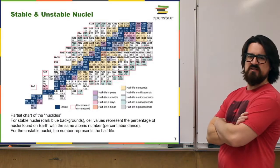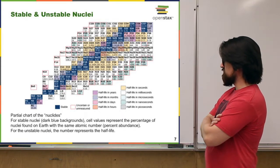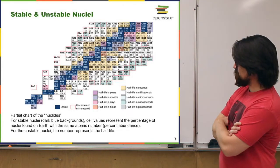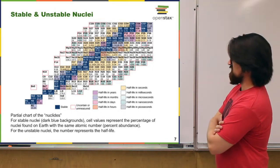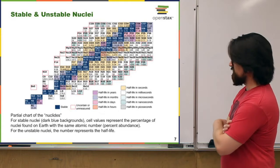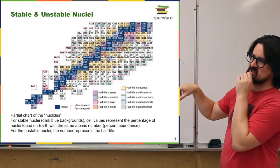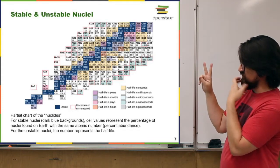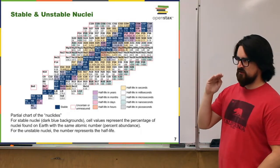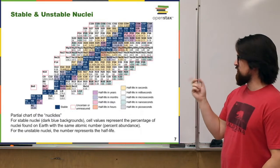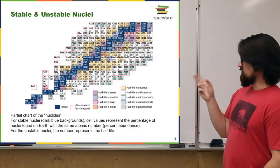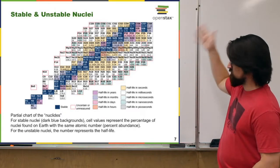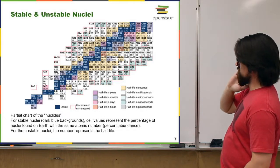This is another way of looking at stable nuclei called the chart of nuclei. The blue band shows stable isotopes. There are two stable isotopes of hydrogen — H1 and H2 — where the number indicates the atomic mass of the isotope. H1 is just one proton; H2 is a proton and a neutron. There are two stable isotopes of helium, two of lithium, one of beryllium, two of boron, and so on. The chart only goes up to chlorine here.